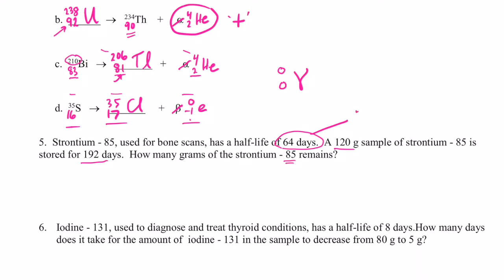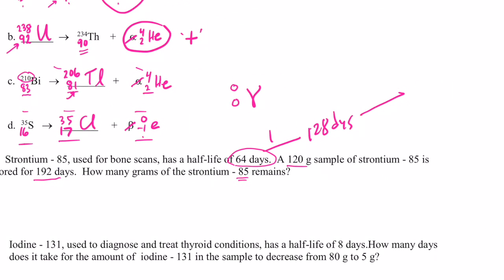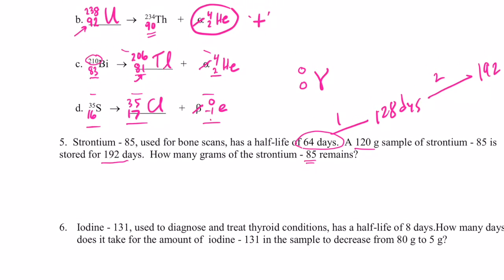64 plus 64, that's 128 days. That would be my first half-life, right? And then if I add another 64 days to that, it gets me to 192 days, which is where I ended up. So it looks like I'm going to go through two half-lives. So if I start with 120 grams, after 64 days... Oh, sorry. Looks like I'm going to go through three half-lives. I messed you up there. After 64 days, that's one half-life. I'll have 60 grams remaining.